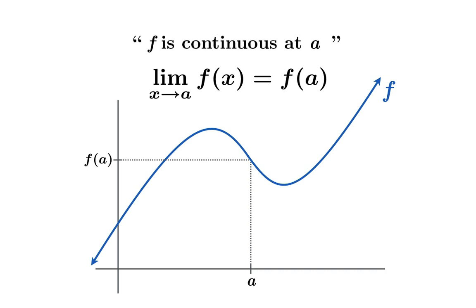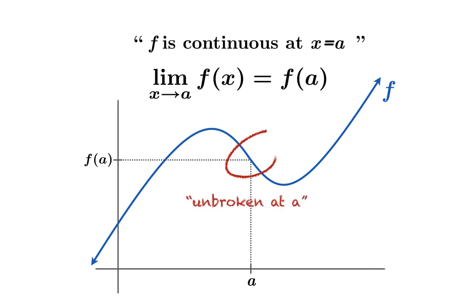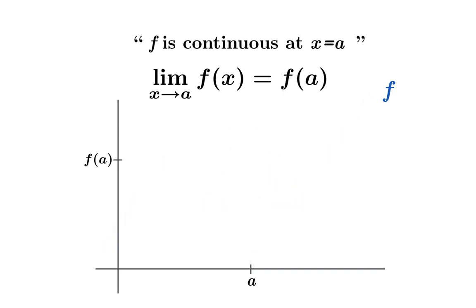Or if we want to emphasize the fact that a is one of the possible inputs x we could use, we might say f is continuous at x equals a. When a function is continuous at an argument a, one of the consequences is that the graph right at the argument a is unbroken, so to speak — the limiting value and the value match. Another way to think about it: the limiting value existing tells you there's some trend the function is building up to, and the fact that the value there equals the limiting value completes that trend.